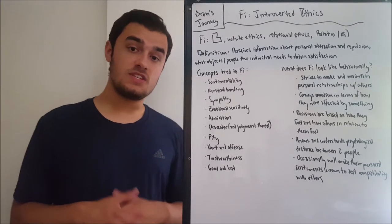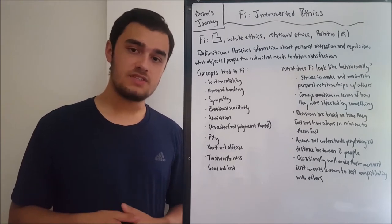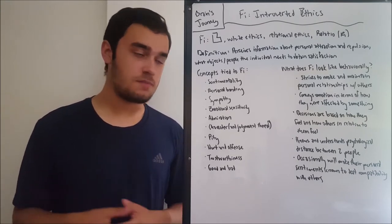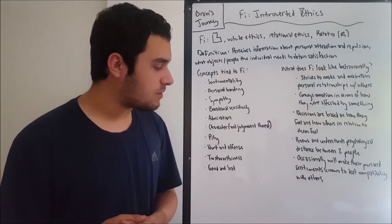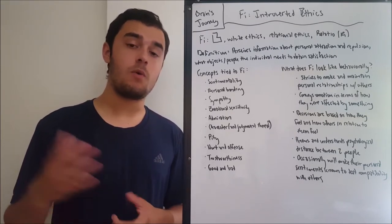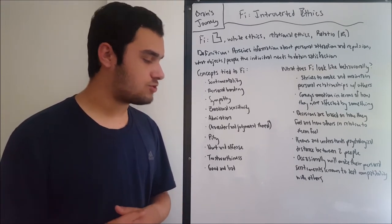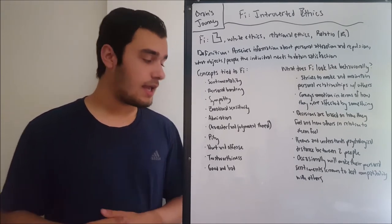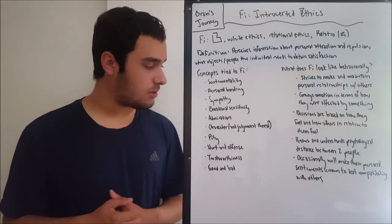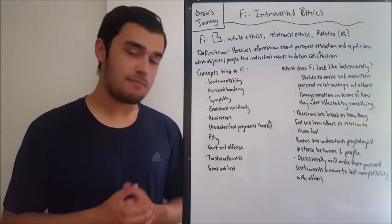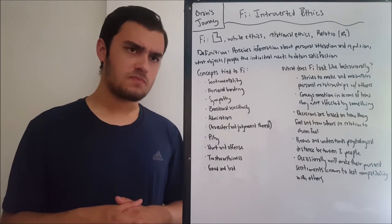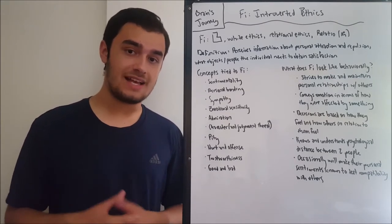Another concept is admiration. Perhaps FI sees somebody it wants to aspire to, somebody it judges as attractive or satisfying, something it wants to be. It will admire people whose goals match up with what it wants to achieve in life. It will try to emulate them, appreciate what they've done, and develop a sentimental bond towards them. Admiration in this sense is the attraction towards a figure that FI has established as sentimental.